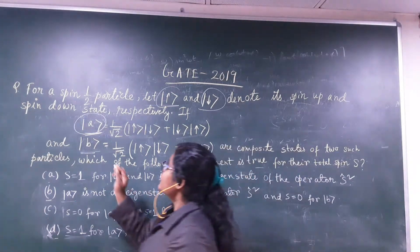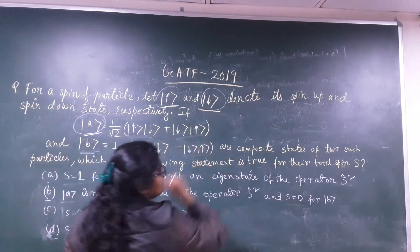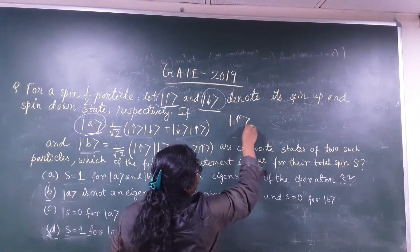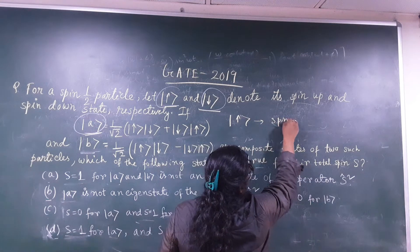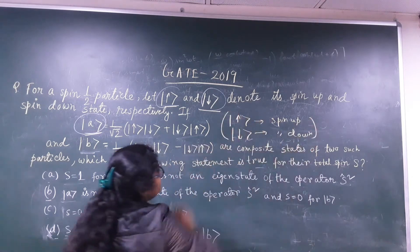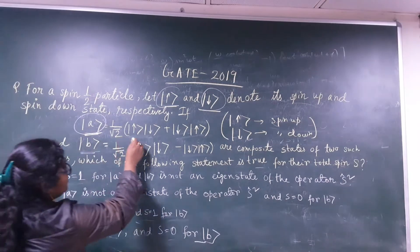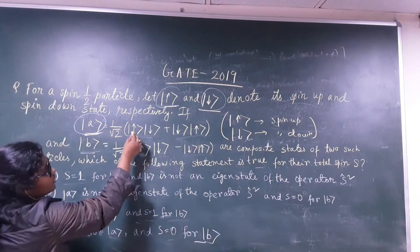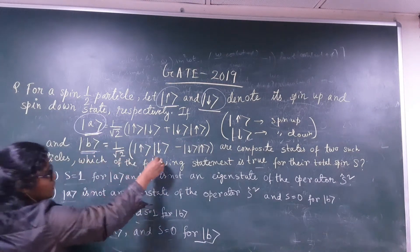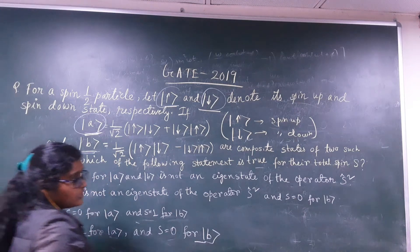The question is: for a spin-half particle, let the state |↑⟩ denote the spin-up state and |↓⟩ denote the spin-down state. Two composite eigenstates are given: state |A⟩ = (1/√2)(|↑↓⟩ + |↓↑⟩) and state |B⟩ = (1/√2)(|↑↓⟩ − |↓↑⟩). These are two composite states of two such spin-half particles.